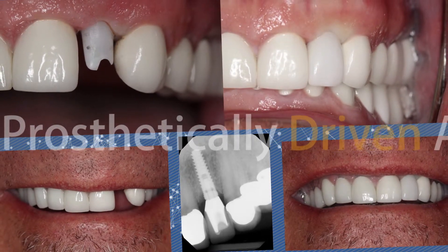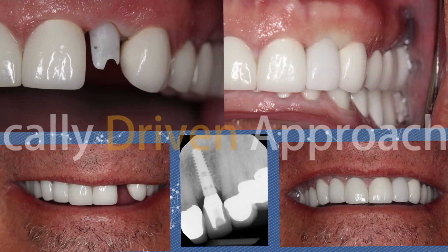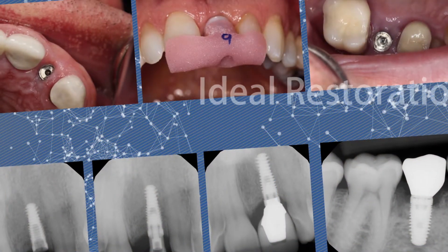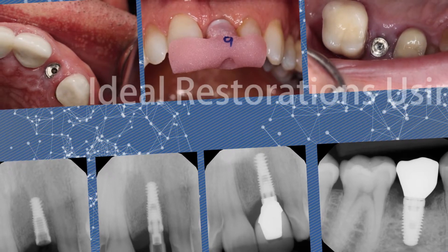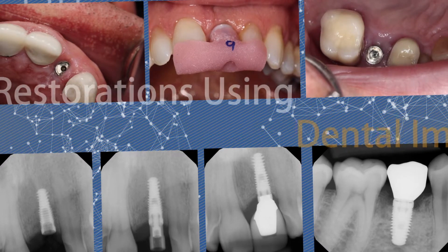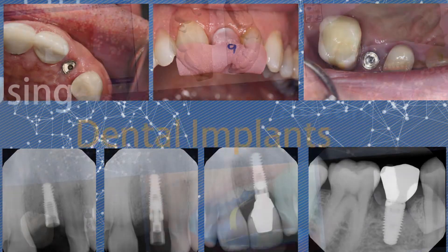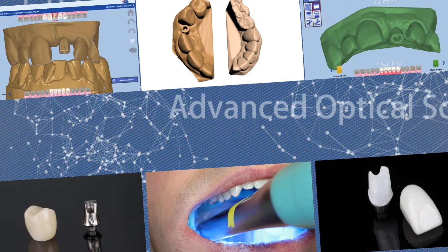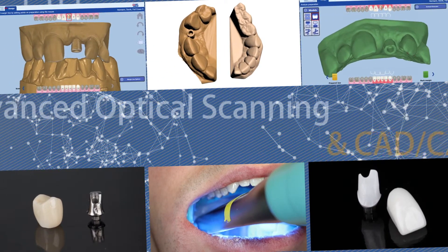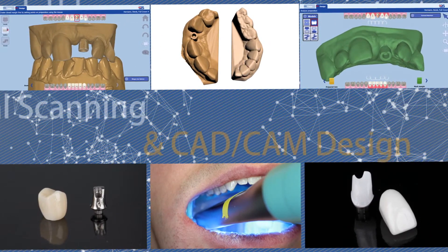Understanding how the final prosthetic outcome relates to patient anatomy, periodontal health, and the physiologic responses to surgical intervention is essential to achieving aesthetic results. If the goal is to accomplish an ideal restoration using dental implants, then bone morphology needs to be accommodated, tissue health optimized, and the implant placed in optimal position for the final prosthesis. Advanced optical scanning techniques and CAD-CAM design of prosthetic components help us address these considerations with precision and efficiency, providing our patients with excellent results while controlling treatment costs.